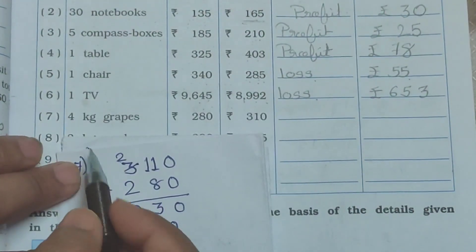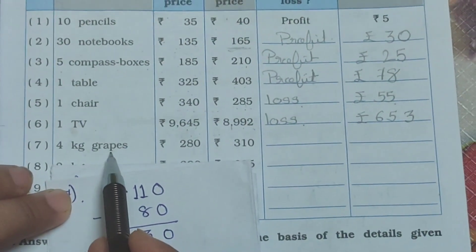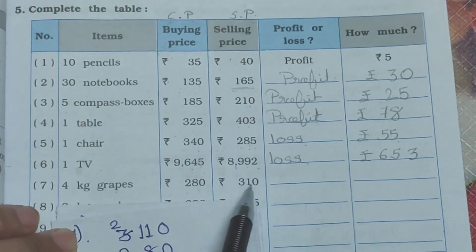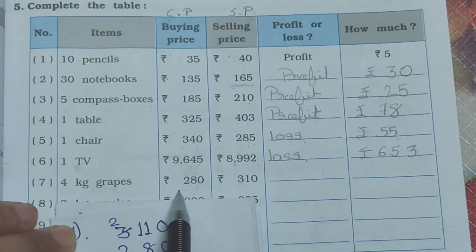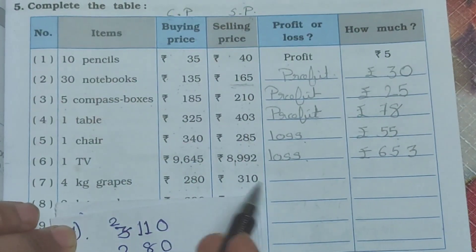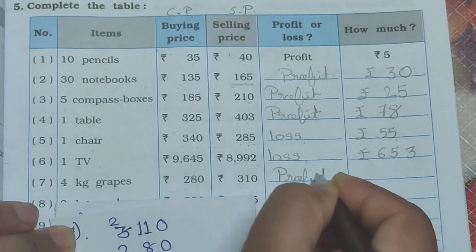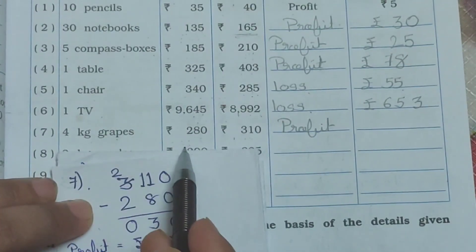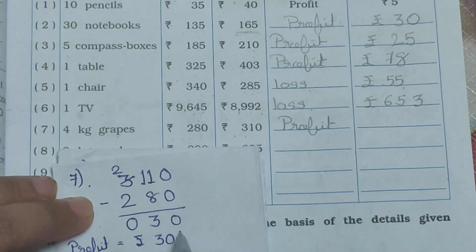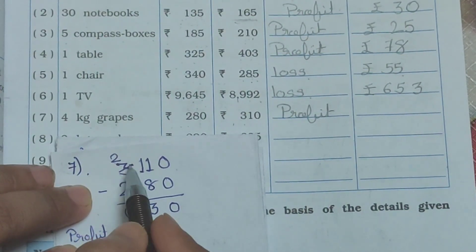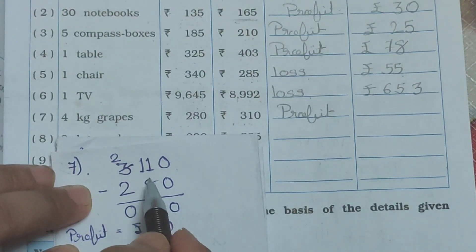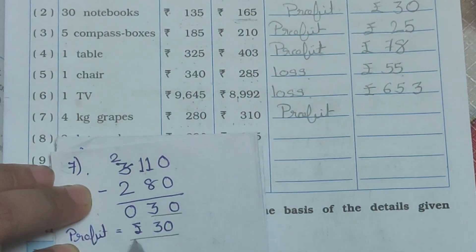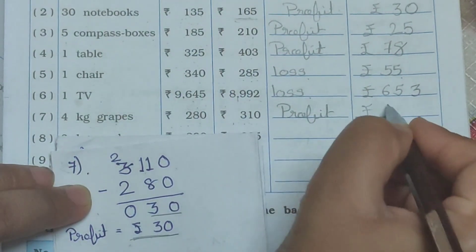Now see the 7th one. Item is 4 kg grapes. Buying price, cost price, is Rs.280, and selling price, Sp, is Rs.310. Sp is greater than Cp, so we get the profit. Write down profit. Profit is equal to Sp minus Cp: 310 minus 280. 0 minus 0 = 0. 1 minus 8 not possible, borrow from 3 — becomes 2 and 11. 11 minus 8 = 3. 2 minus 2 = 0. So profit is Rs.30. Write down Rs.30.